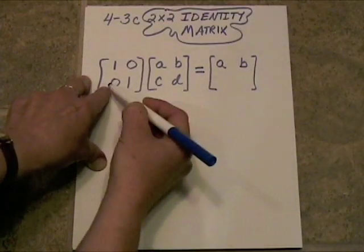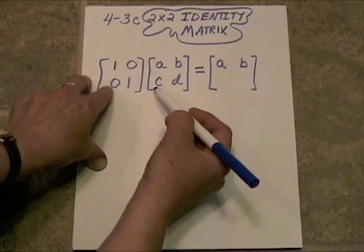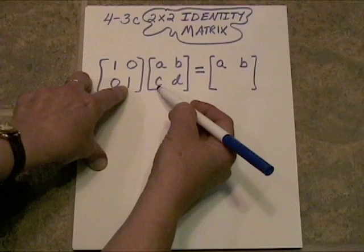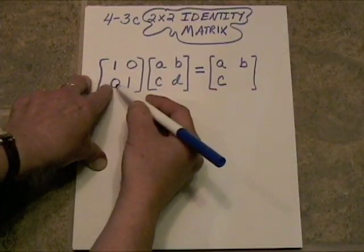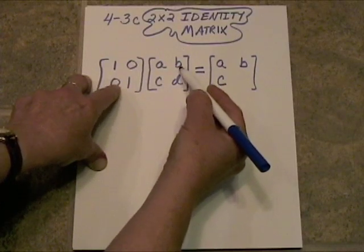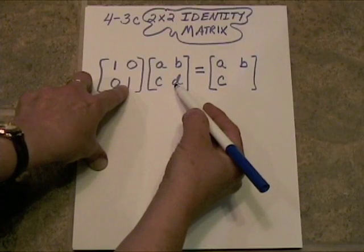Here we take this row times this column. We get 0 times A, which is 0, and 1 times C, which is C. And in like manner, 0 times B, which is 0, and 1 times D, which is D.